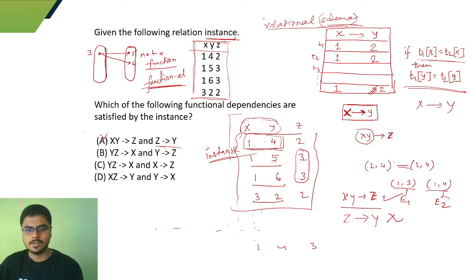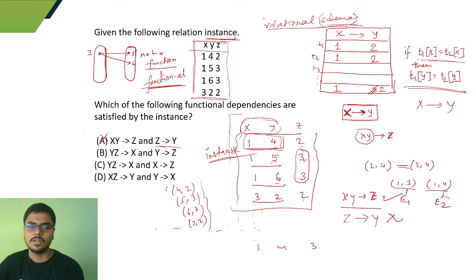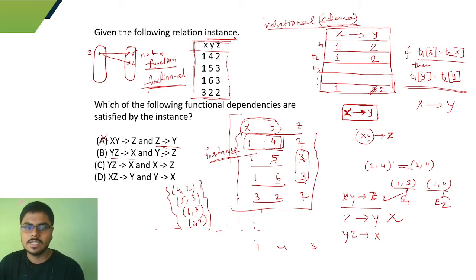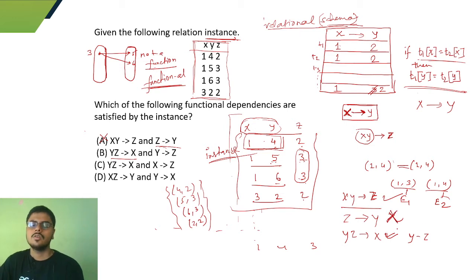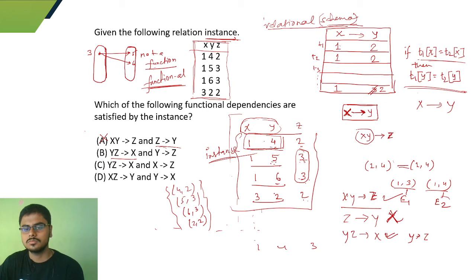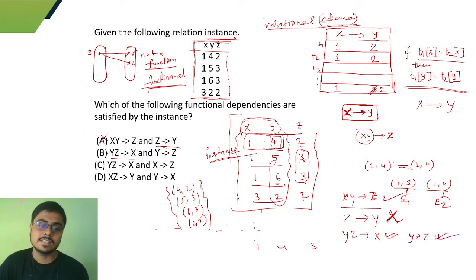Checking YZ → X: YZ pairs are (1,4), (1,5), (1,6), (3,2) — no repetition among these pairs, so YZ → X holds with no violation. Now checking Y → Z: Y values are 1, 1, 1, 3. Y=1 appears three times. The corresponding Z values for Y=1 are 4, 5, 6 — three different values. So 1 is mapped to 4, 5, and 6, which means there are multiple images of 1. This violates the functional dependency condition, so Y → Z does not hold. Since we need a single correct answer and Y → Z does not hold, we can identify the correct option — but let's check all options for practice.